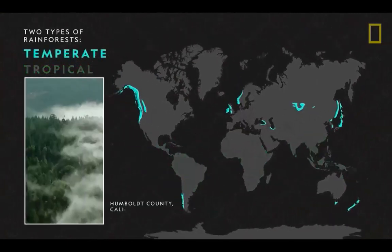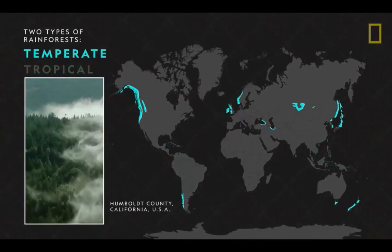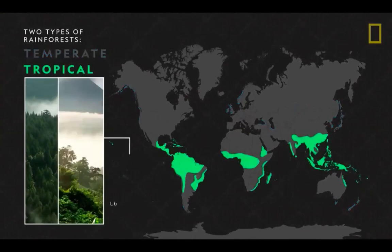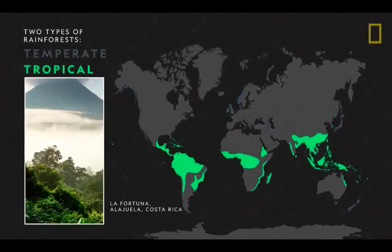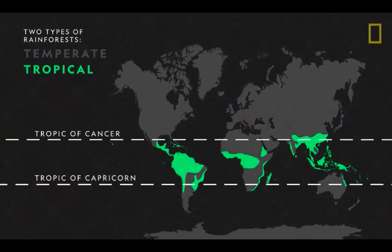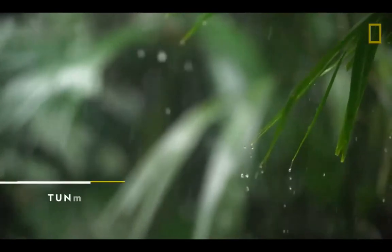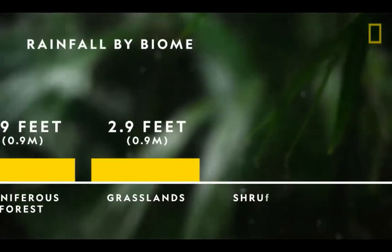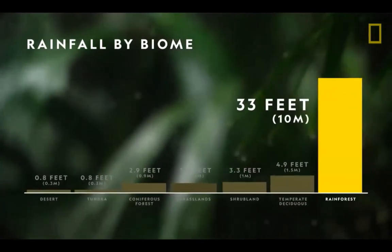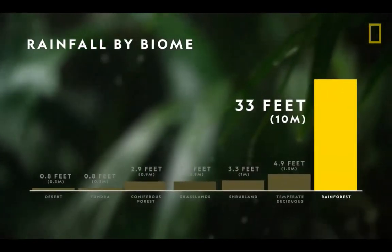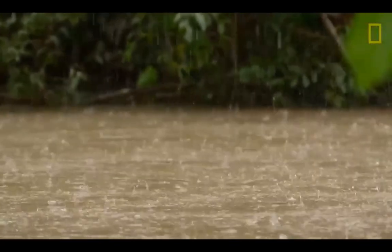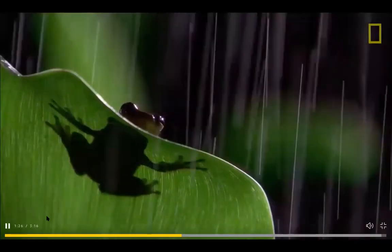Temperate rainforests are mainly found in the mid-latitudes, often near cooler, coastal, mountainous regions. Tropical rainforests are primarily located in warmer climates, between the Tropic of Cancer and the Tropic of Capricorn. As their names imply, temperate and tropical rainforests are the wettest forests on earth, receiving up to about 33 feet of rain per year. This precipitation plays a critical role in creating an exceptionally lush and biologically diverse habitat.